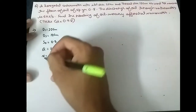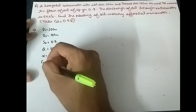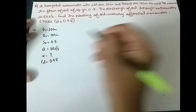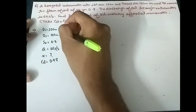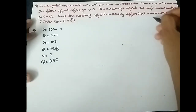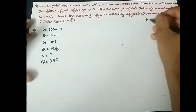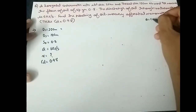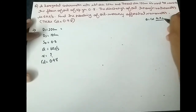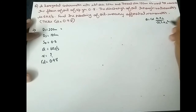We also have CD equal to 0.98. Now from the formula: Q is equal to CD into A1·A2 divided by the square root of (A1² minus A2²), multiplied by the square root of 2g·h.